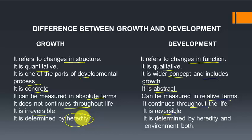Growth is irreversible; development is reversible. Growth is majorly determined by heredity, though environment also has a role — for example, a person with hereditary characteristics for long height or high immunity still needs proper nutrition and a healthy environment to realize that potential. Development is determined by both heredity and environment equally.